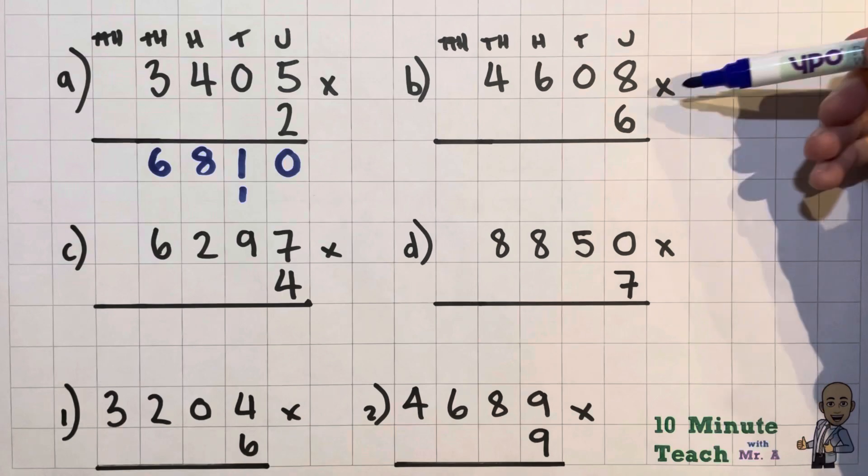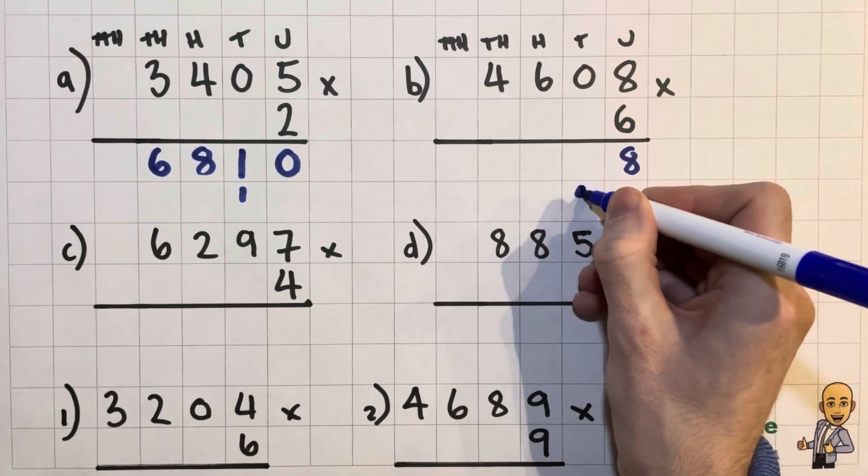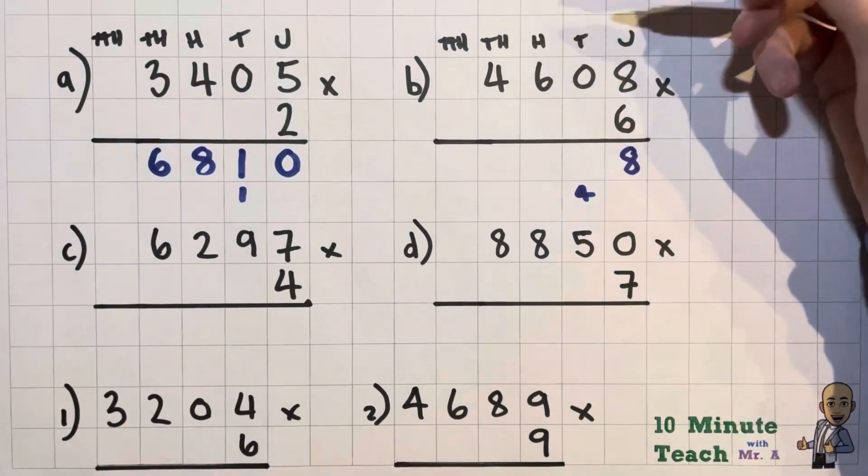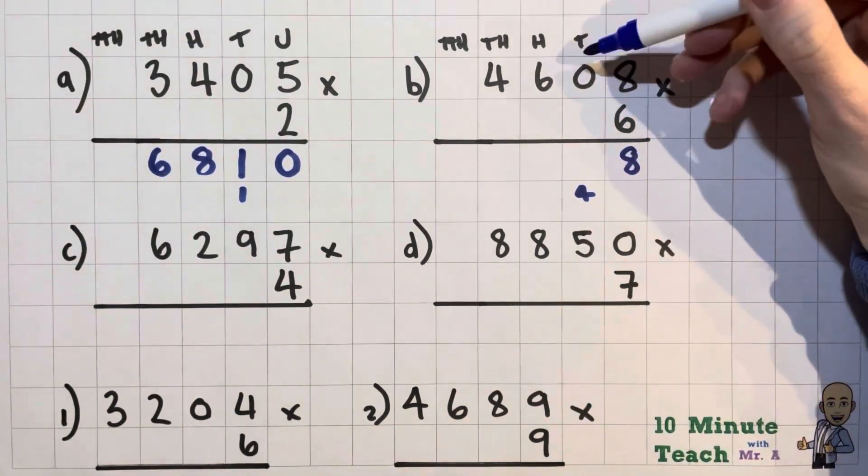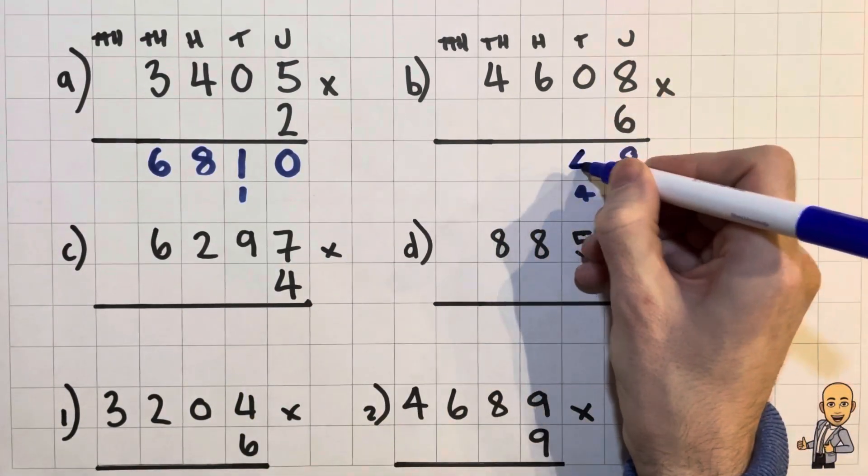So 6 eights are 48, so I'll put my units down and I carry my tens over. And I've got no lots of 6 again, which is 0, and I've got my 4 tens to add on there. So I've got 48 so far.